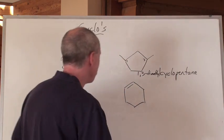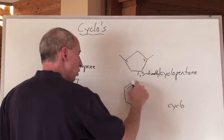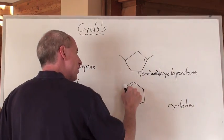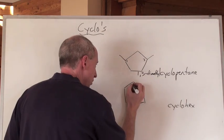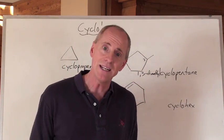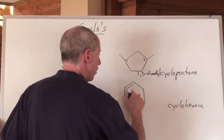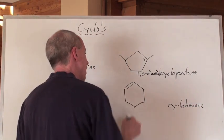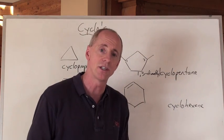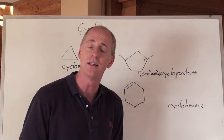Now that last one — that is a cyclo. It's cyclohex, because there's six. But there's a double bond, so it's an ene — a cyclohexene. If you moved that double bond to any position, it would always be at the one-ene, so that would be redundant. You can just say cyclohexene.